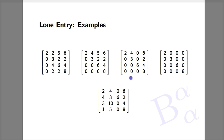Moving on to the third matrix, 2 is still an eigenvalue, but now there's also the 6. This entry is alone in its column and it's also on the diagonal because it is in column 3 and row 3.